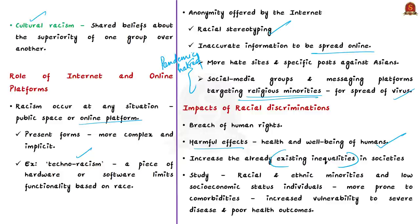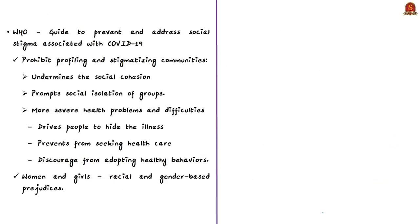As per a recent study, people from racial and ethnic minorities and those with low socioeconomic status are more prone to comorbidities because they have limited access to care, increased perceived discrimination, and limited access to resources. This increases their vulnerability to severe diseases and results in poor health outcomes, clearly seen with COVID-19 infections. WHO also called for preventing and addressing the social stigma associated with COVID-19.